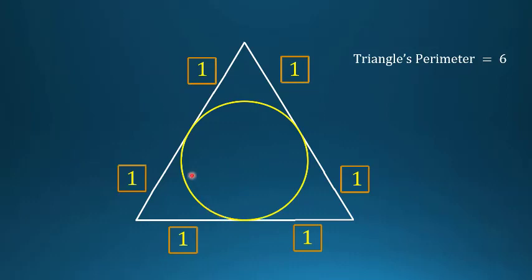In the next step, draw the inscribed circle of this triangle. By symmetry, each of these lengths is equal to 1, so we have six 1s.